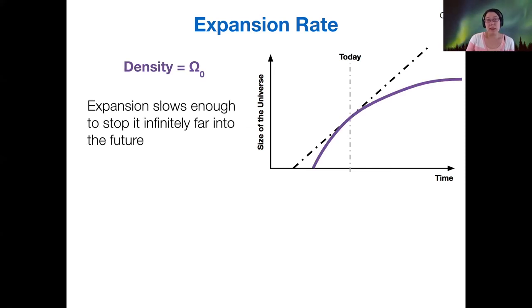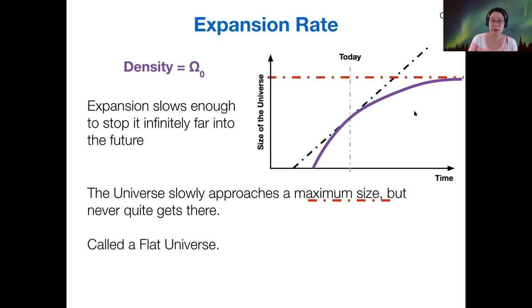So there are some other options. Let's say that we have a critical density universe. So the actual density is equal to this Omega naught critical density. In that case, we can see that the expansion is slowing down and eventually in the very far future, the universe will stop expanding, but only at an infinite time.